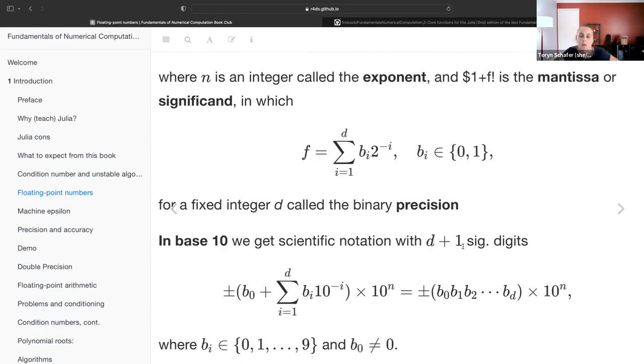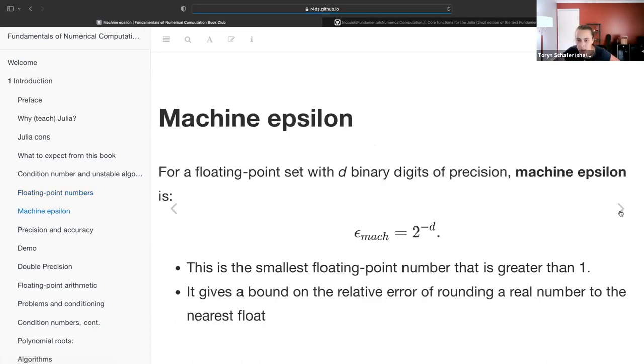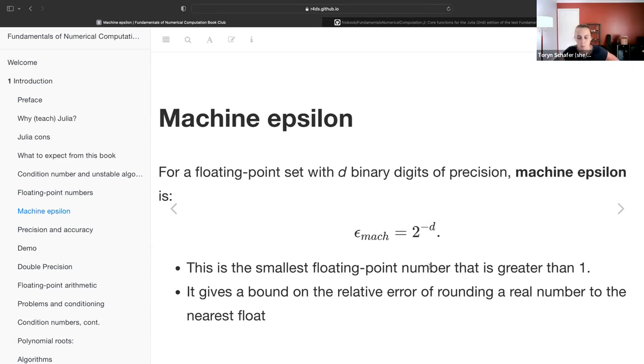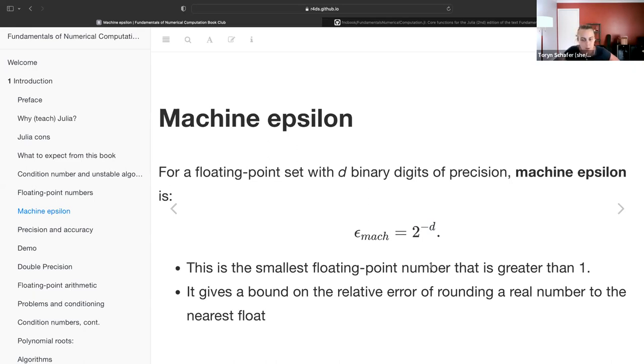For a specific D, this floating point number will have D plus one significant digits. The main takeaway is that this is how computers represent numbers and it's finite. We have finite precision when we do machine calculations, and that precision can be expressed in terms of the machine epsilon. The machine epsilon is 2^(-D). This is the smallest floating point number that is greater than one. It's not a universal bound on error for every number. It just gives a bound on relative error of rounding a real number to the nearest float, and that error is variable depending on the actual magnitude of that number.